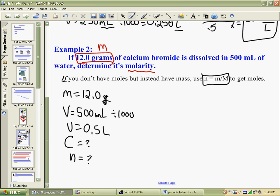Well, to get the number of moles, we know that you can take the mass and divide by the molar mass. Well, the mass is 12 grams. But, we don't have the molar mass. So, to get the molar mass, we look at what our substance is. Calcium bromide.